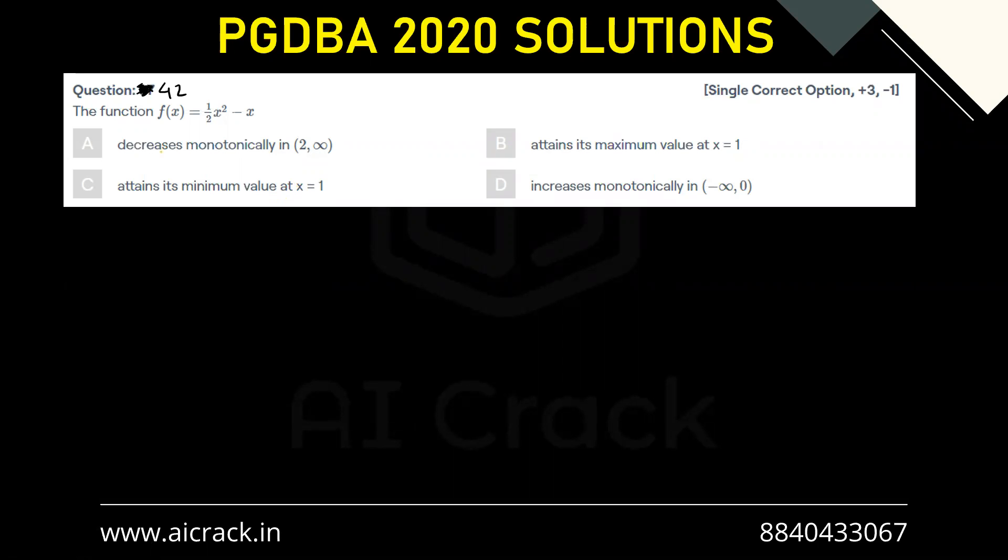Hi everyone, let's solve question number 42. The function f(x) = (1/2)x² - x. We have to find out which option is correct. This is a classical question of AOD and we can do it by two ways: the first way is plot the graph of this function, the second way is by the help of first derivative test.